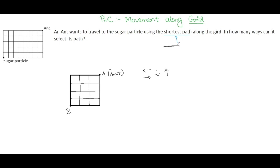Questions about movement along a grid will always be shortest path questions. If the shortest path constraint is not mentioned explicitly, you need to understand that the number of ways Amit can go from point A to point B is infinite — he can go to point C, then D, then F, do the same rotation a million times before reaching point B. But that is not the shortest path. The shortest path is when Amit travels only in the south and west directions, considering north to be upward.